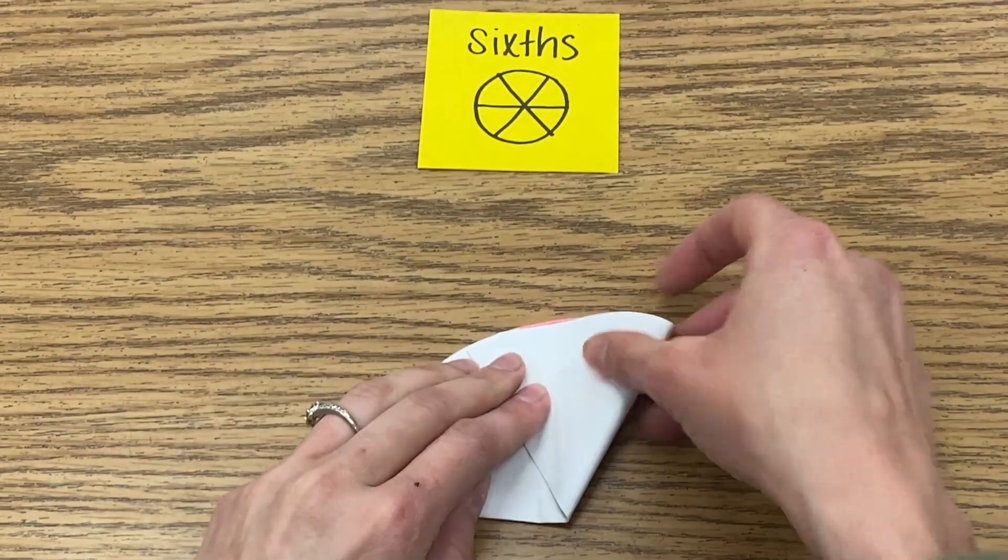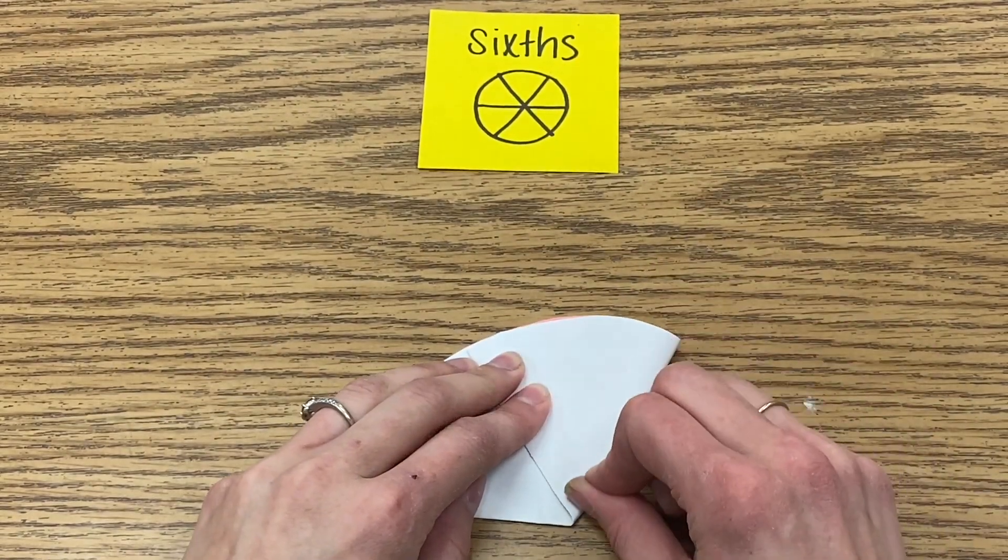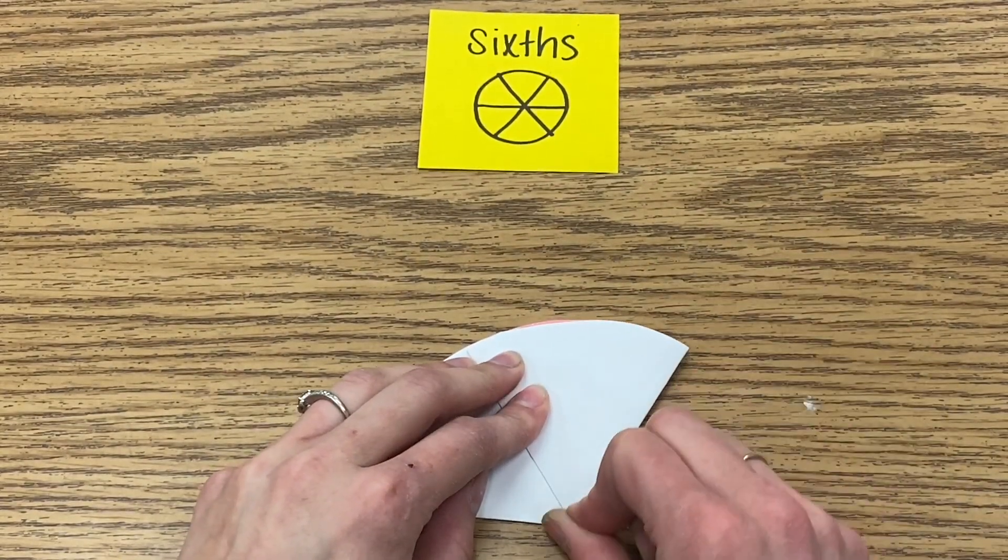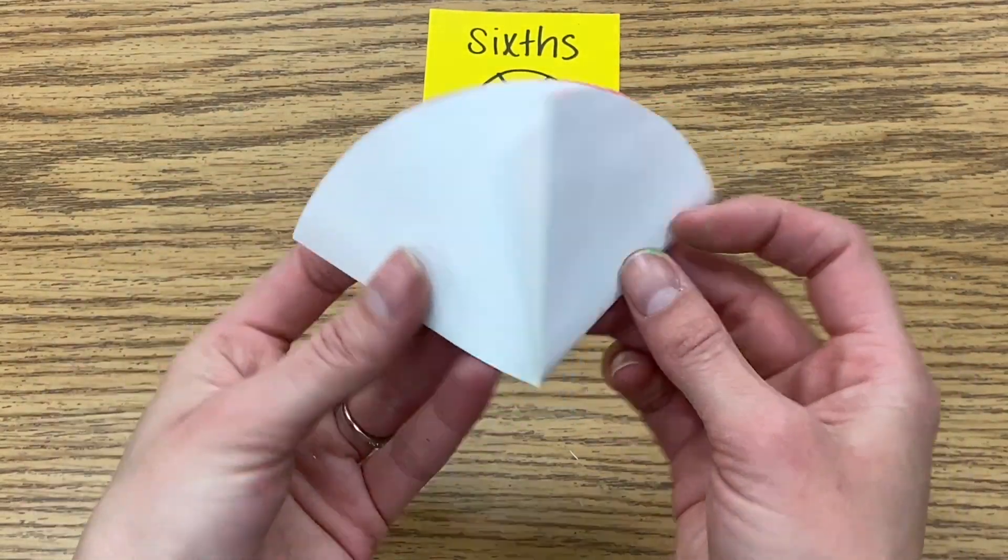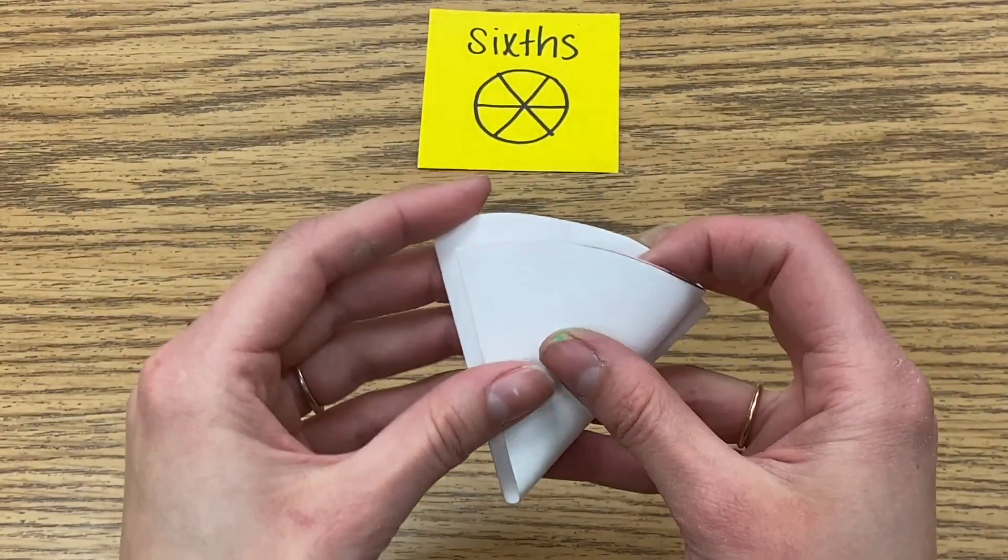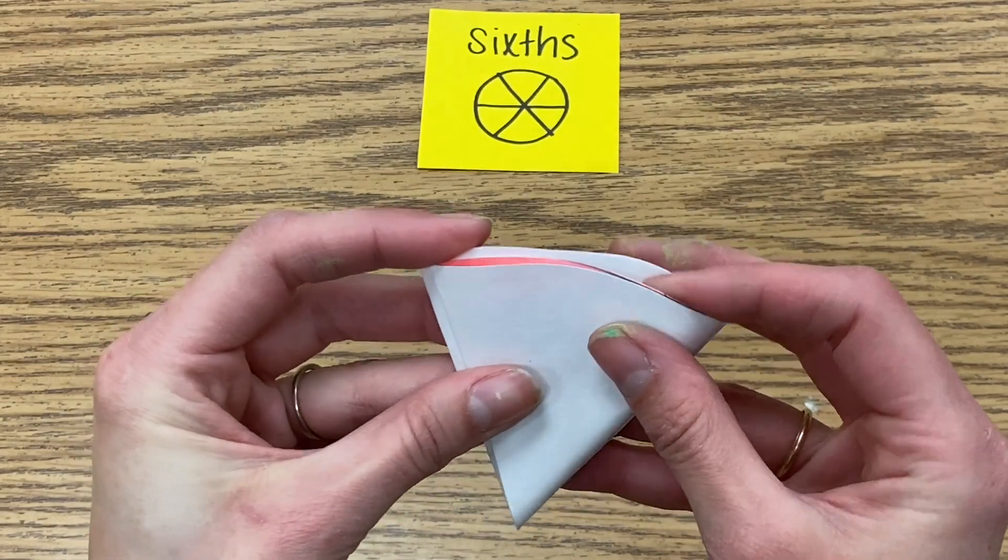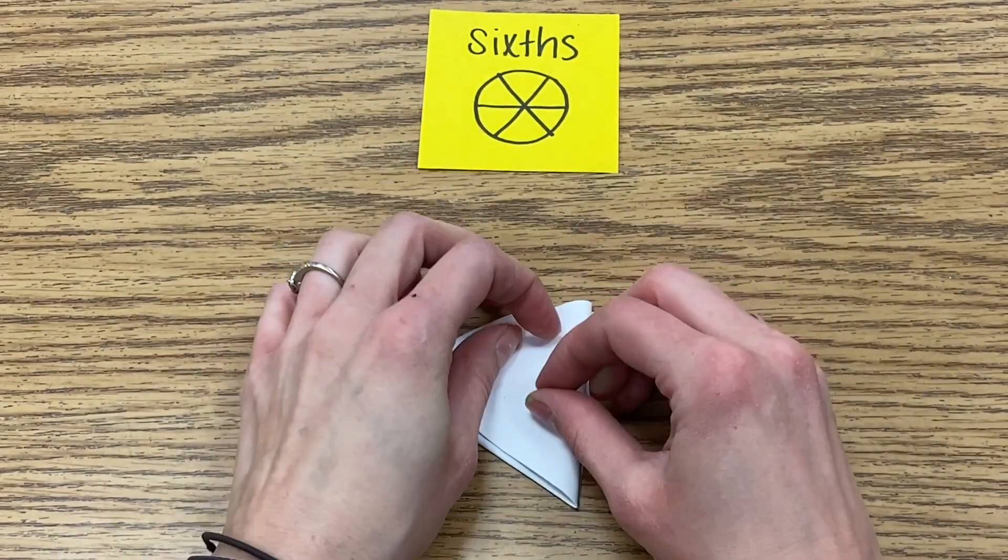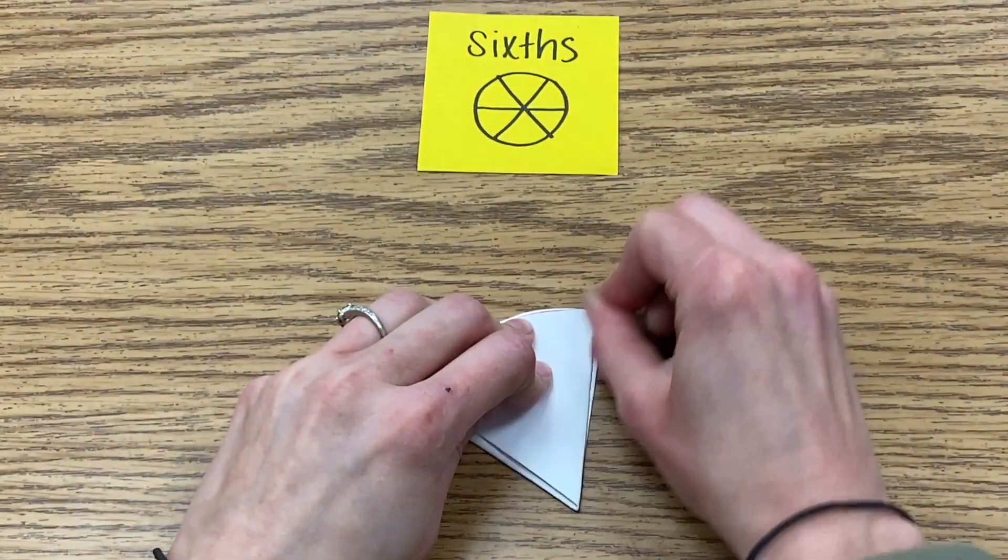I'll put it on the table, take the back of my thumb and really smooth that fold. Then I like to take this back side and I bend it backwards and again it's not perfect and that is okay. Take my finger and really smooth out that fold.